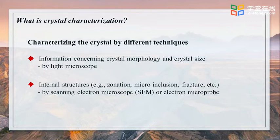including transmitted or reflected light modes. For the characteristics of internal structures of the mineral, like zonation, microinclusions, or fractures, and so on, this can be done by checking the backscattered electron image and cathodoluminescence image, taken on the scanning electron microscope or electron microprobe.